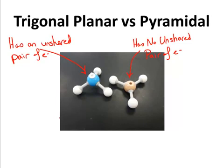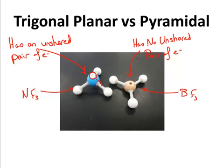So what's the difference between trigonal planar and trigonal pyramidal? They both have three elements coming off the central atom — like boron trifluoride versus nitrogen trifluoride. The difference is that nitrogen has an extra unshared pair of electrons on the central atom, and that causes repulsion of the other electron pairs downward into a pyramidal shape. In boron, in the absence of this lone pair, the bonds spring upward and form 120 degree bond angles.